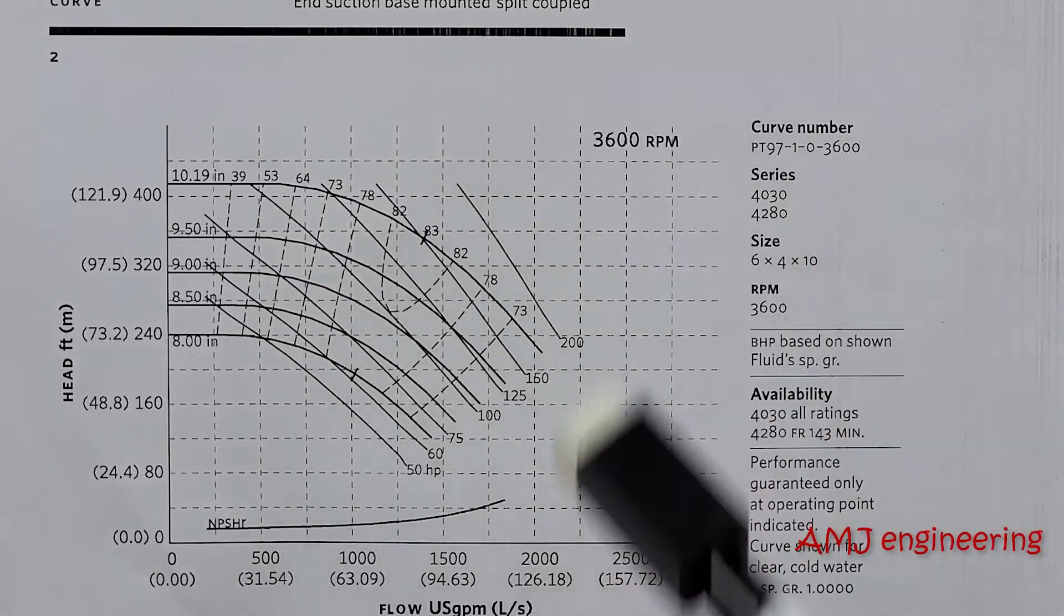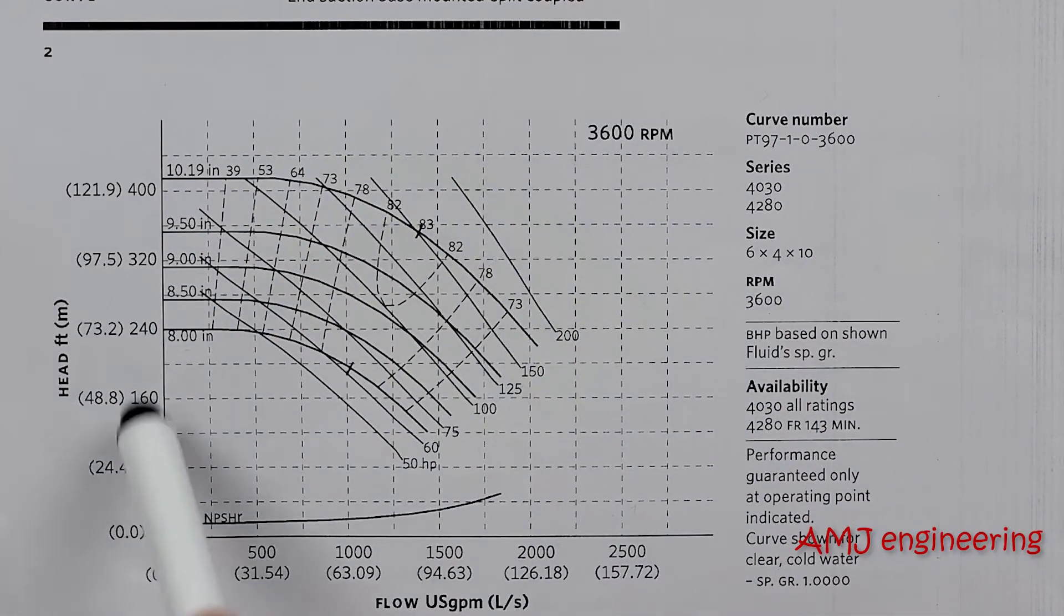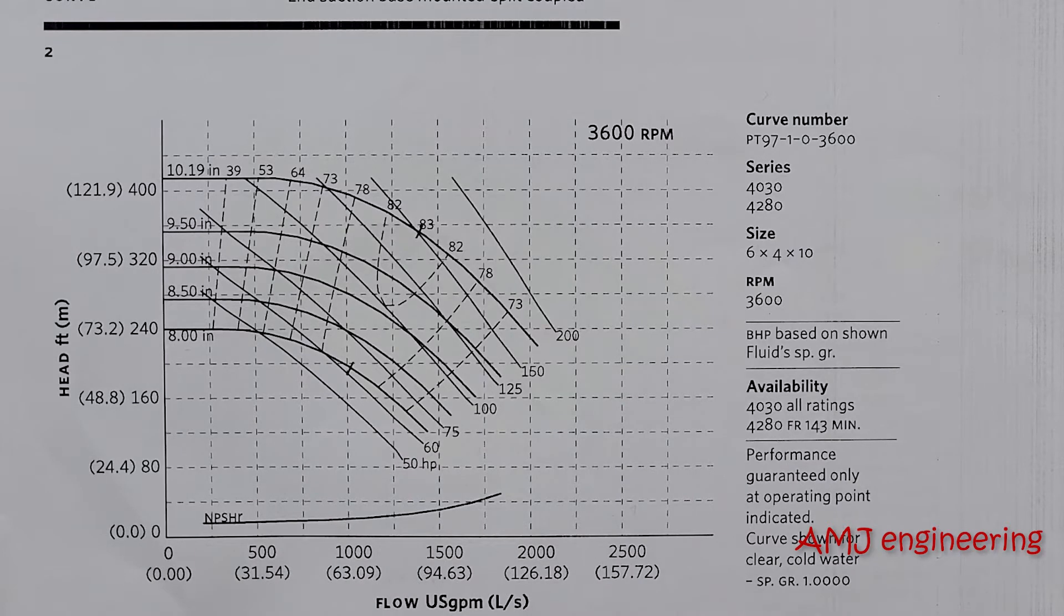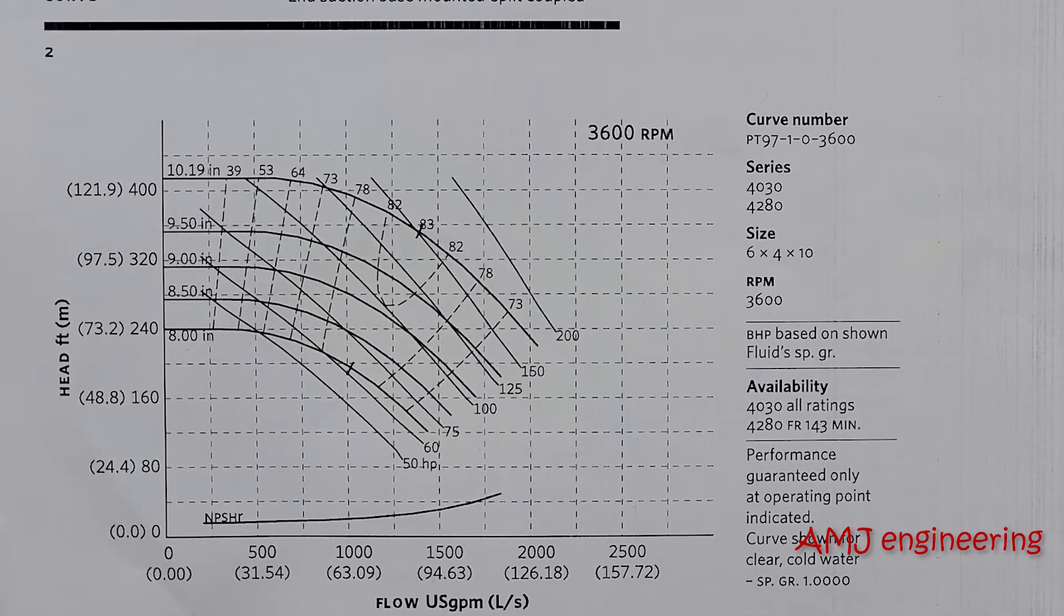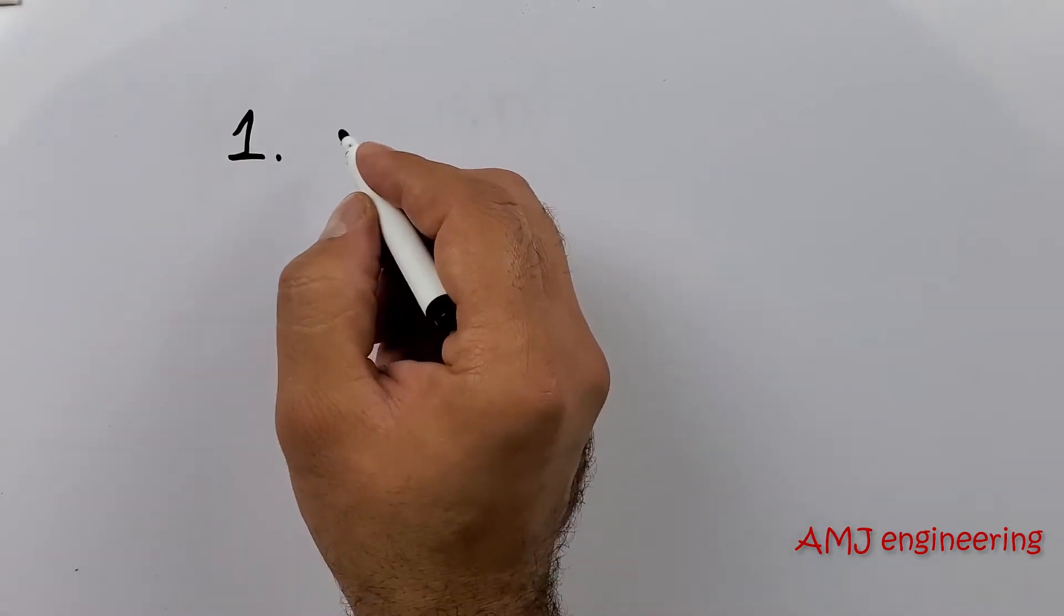Changing the motor speed gives us different performance curves. Let's see what happens to these curves if we selected a motor at 3600 RPM. From the first look on the chart, you can see that flow and head increased. Actually, we can predict these numbers and draw this chart using the pump affinity laws.